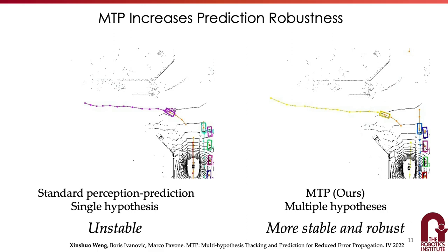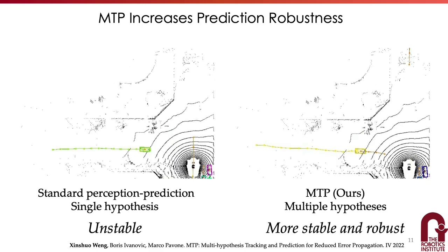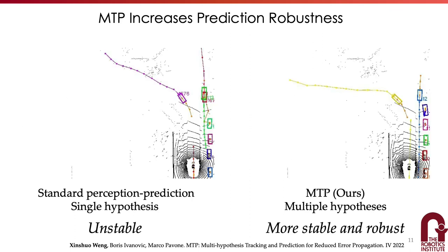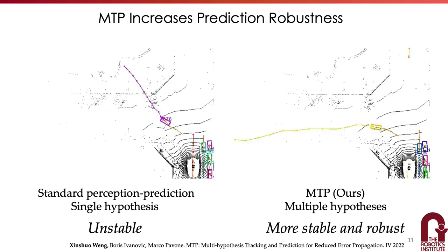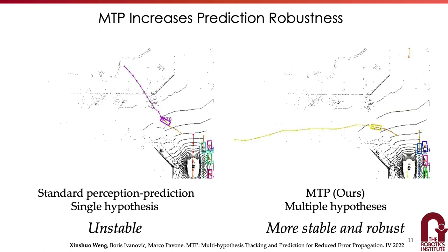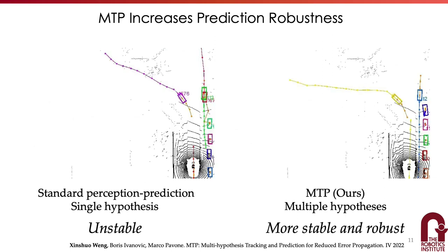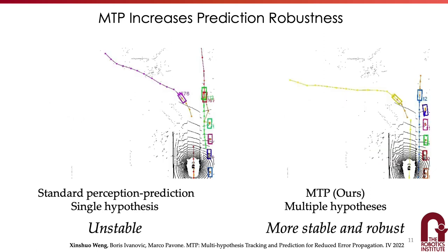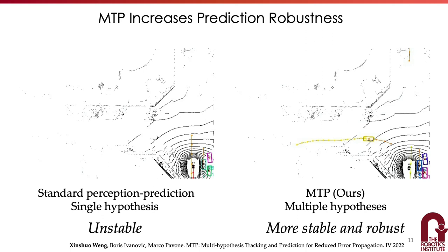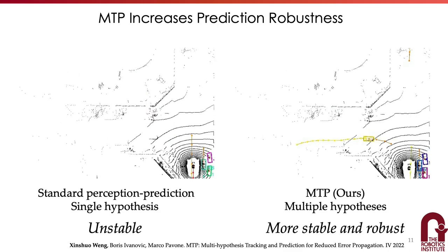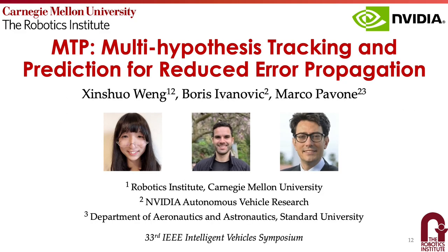As a concrete example, we visualize the prediction results produced by MTP on the right, and the standard tracking-prediction pipeline with a single hypothesis on the left — here, only the best prediction sample is visualized. For the purple object shown on the left, its prediction is unstable in some frames because of missing tracking and fragments. In contrast, MTP produces stable predictions for all frames in this video by leveraging more tracking hypotheses. For more details, please contact us via email. Thanks for watching.